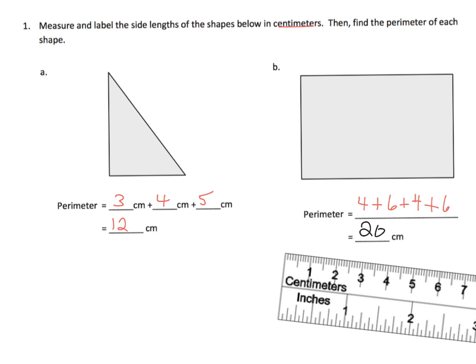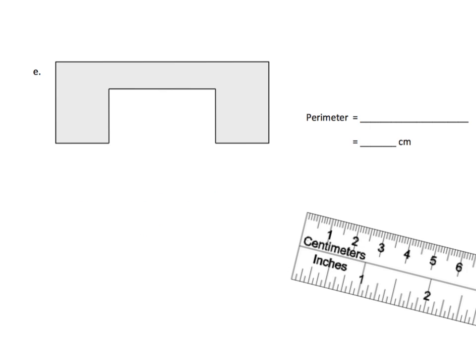Eureka also gives us funky irregular shapes to further reinforce what perimeter is. Perimeter is best reinforced with funky shapes because you can't rely on a simple formula or visual clues — you just have to know that perimeter is the distance if you were to trace your finger around the entire shape.